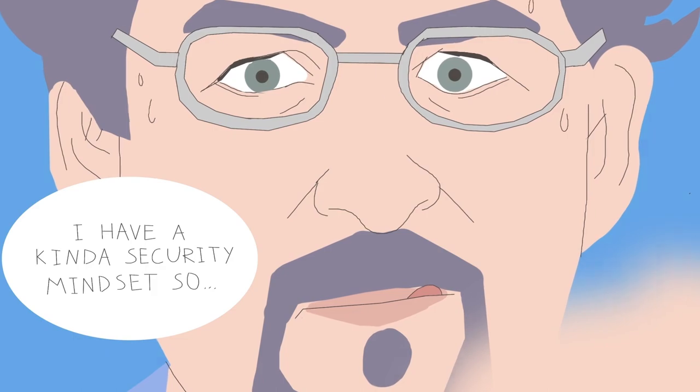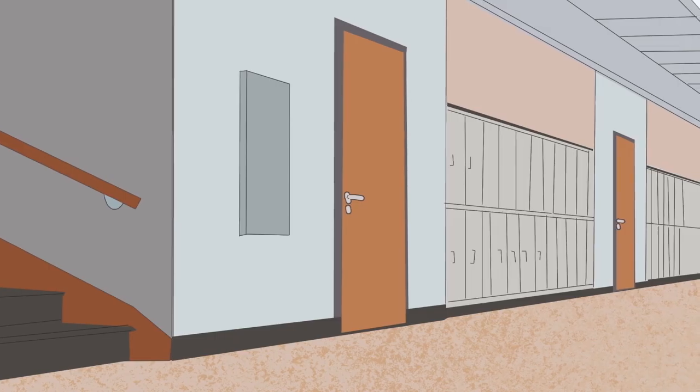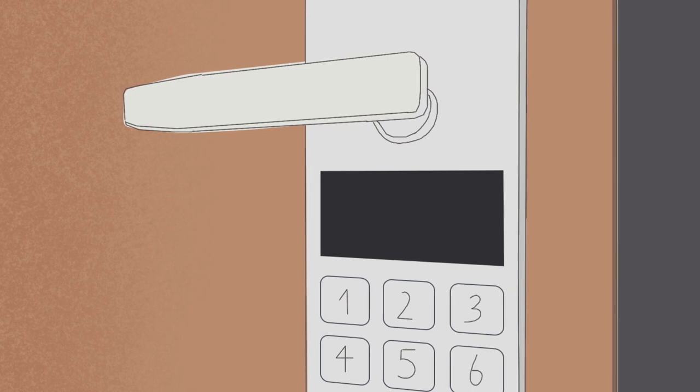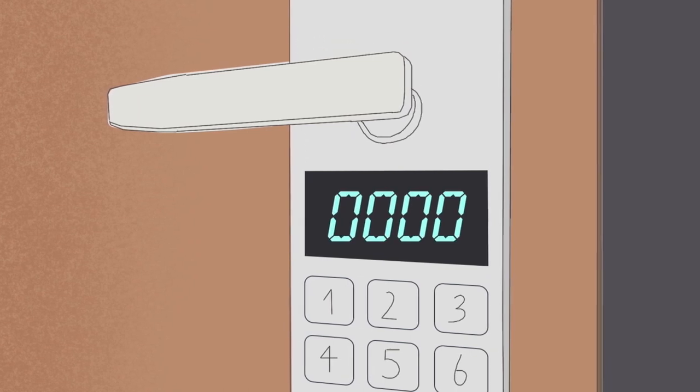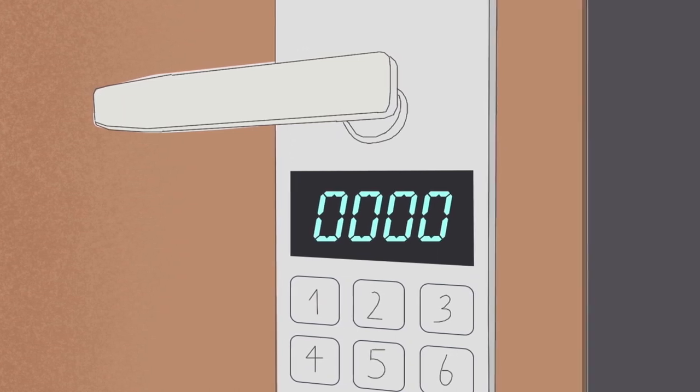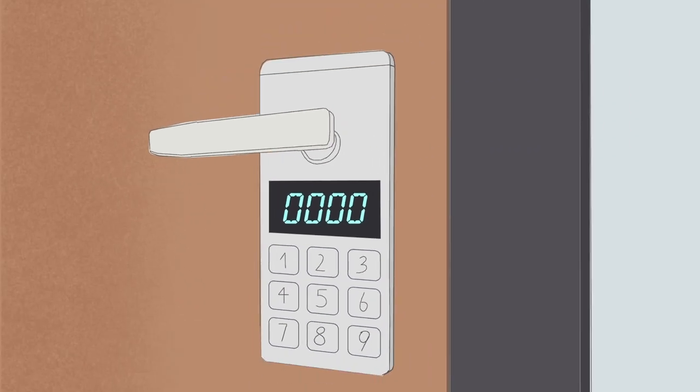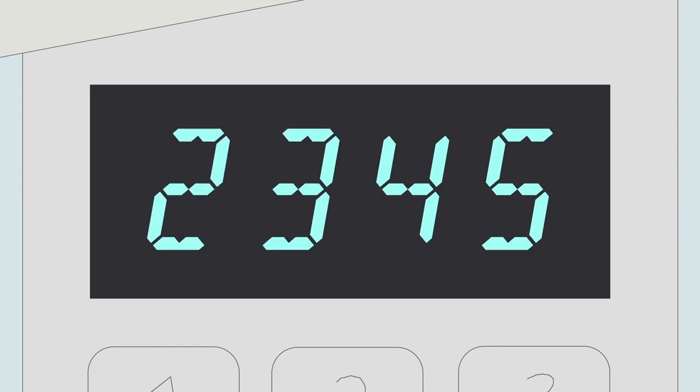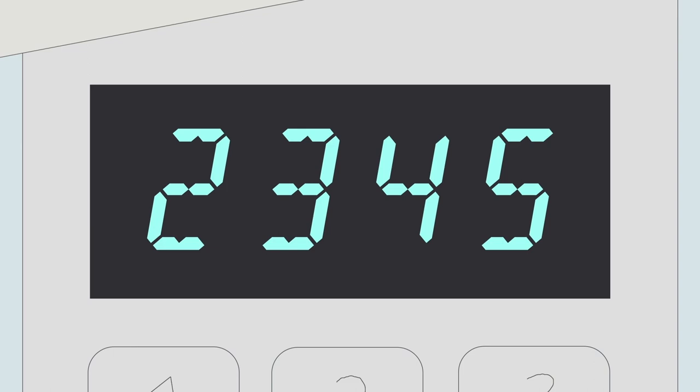I have a kind of security mindset, so I noticed that the university had some pin codes on the doors. I realized that this code is a four-digit code, but there was no button to press enter to let you in. If the code was 2345, it would let you in whether you typed 12345 or just 2345.